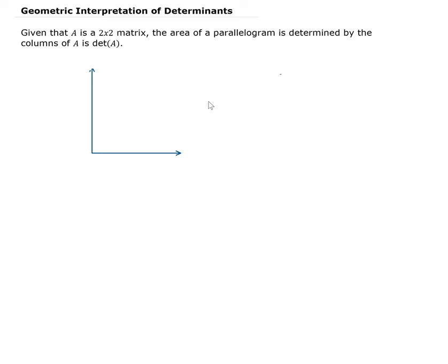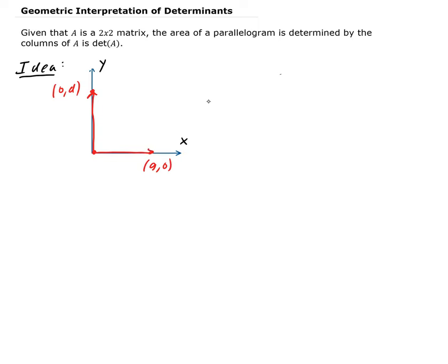Let's look at a simple idea of this. Let's say I have a point out here — this is A units — so there's going to be a vector at (A, 0). And up here somewhere is going to be (0, D). We're assuming this is the y-axis and this is the x-axis. So we have a vector at (0, D) and another vector at (A, 0).